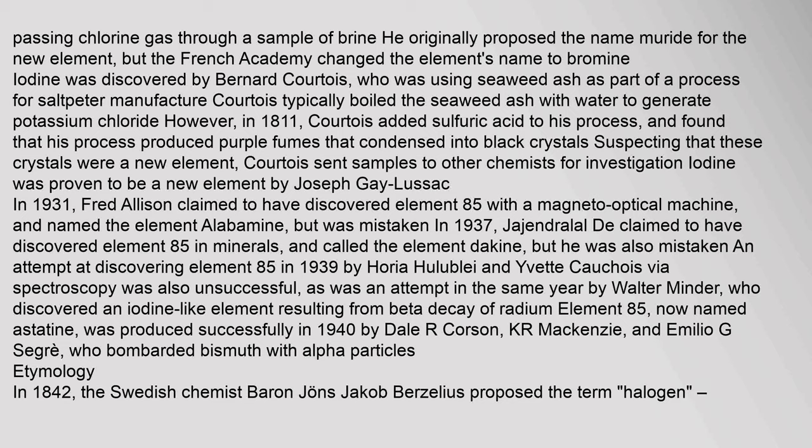In 1811, Courtois added sulfuric acid to his process and found that it produced purple fumes that condensed into black crystals. Suspecting that these crystals were a new element, Courtois sent samples to other chemists for investigation. Iodine was proven to be a new element by Joseph Gay-Lussac. Fred Allison claimed to have discovered element 85 with a magneto-optical machine and named it Alabamine, but was mistaken. In 1937, Rajindralal De claimed to have discovered element 85 in minerals and called it Dor, but was also mistaken.